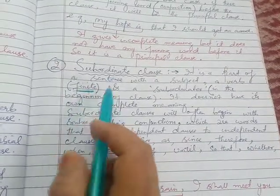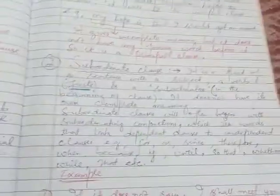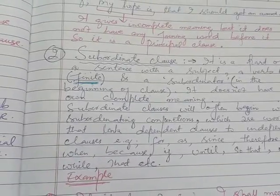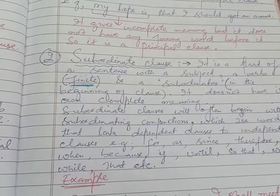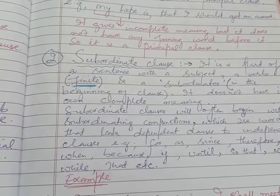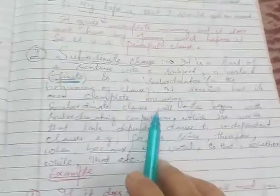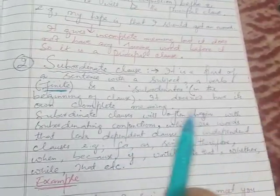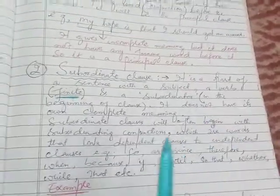On the other hand, non-finite verbs are also called verbals. Infinitives, past participles, and gerunds are called non-finite verbs — like: baking, to bake, singing, to sing. These are all non-finite verbs.